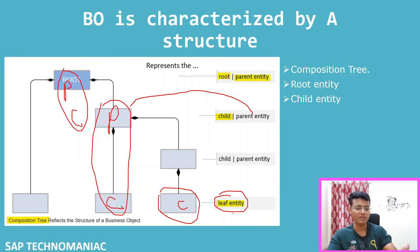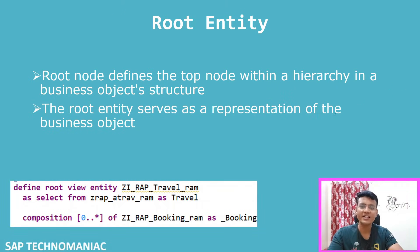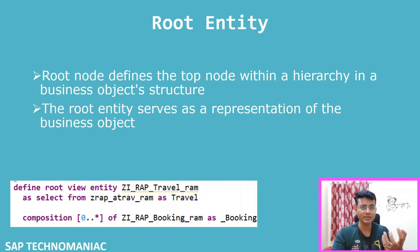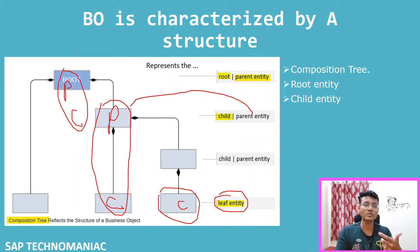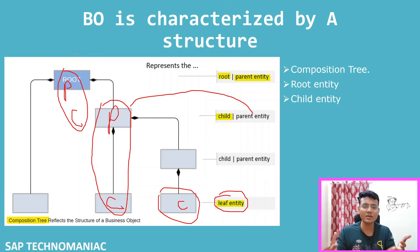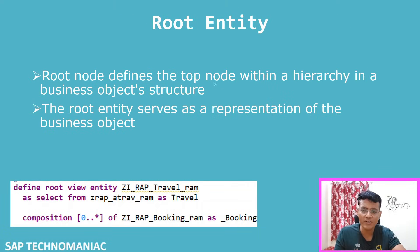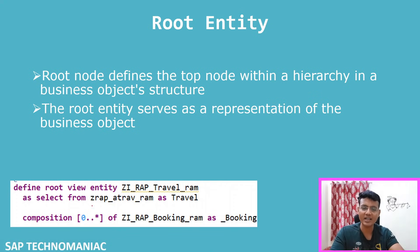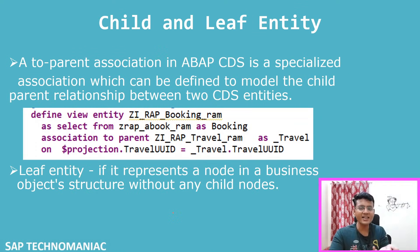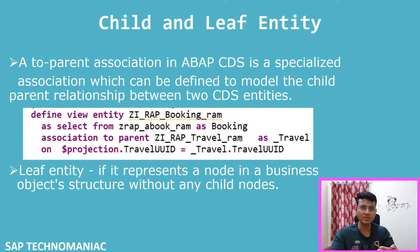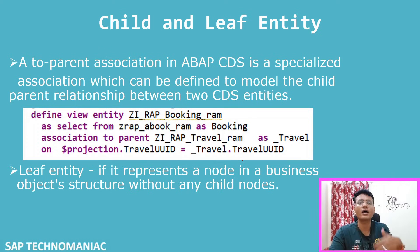The last node acts only as a child - it has a parent but no child of its own, so we call it a leaf entity. To summarize the node types: the root node is at the top level of the hierarchy and serves as the representation of the entire business object - like the sales order represents the whole business object. The leaf entity has no child and acts only as a child to another parent. The syntax uses 'composition to child entity' in the root, and 'association to parent' in the child.